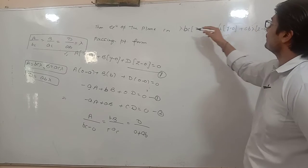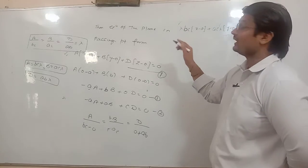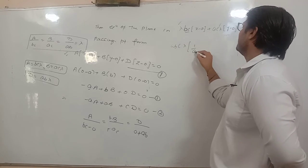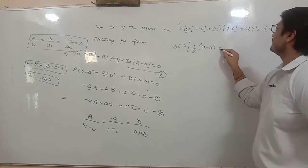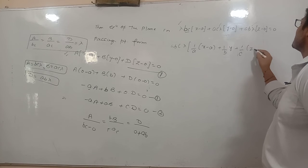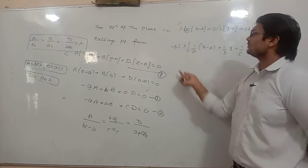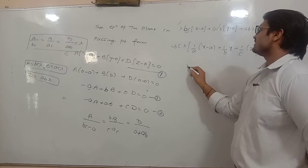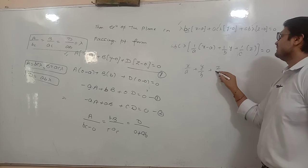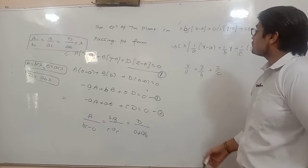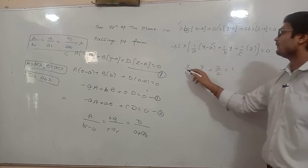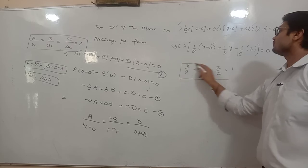Lambda और ABC common निकालने पर अंदर बचता है: 1 upon A into (x minus a) plus 1 upon B into y plus 1 upon C into z equals 0। इसको simplify करने पर: x/a plus y/b plus z/c equals 1 — यह plane की intercept form की equation है।